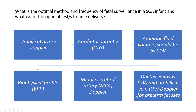What is the optimal method and frequency of fetal surveillance in an SGA fetus, and what are the optimal tests to time delivery? These include: umbilical artery Doppler, cardiotocography, AFI — measured by single deepest vertical pocket — biophysical profile, middle cerebral artery Doppler, ductus venosus, and umbilical artery Doppler for preterm fetuses. Note that ductus venosus and umbilical artery Doppler are specifically for preterm fetuses.